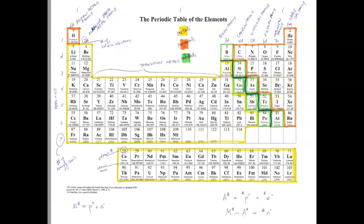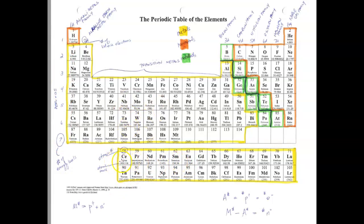Knowing the characteristics and the three different types of elements is one thing you should have labeled on your periodic table. The other thing to label are the period numbers — on the left-hand side, numbered 1 all the way down to 7. The bottom sections would be labeled as period 6 and period 7.